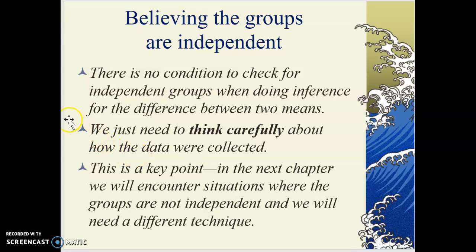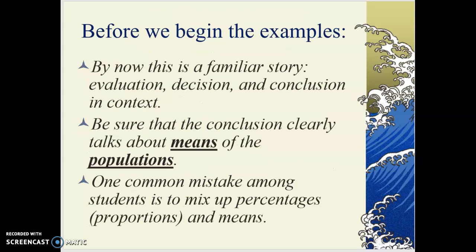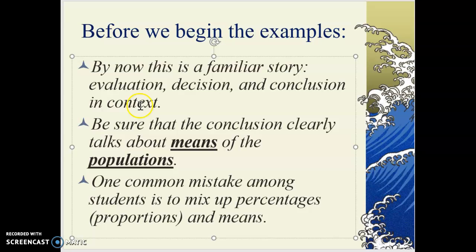Regarding independence, there's no special condition to check mechanically — you just need to think carefully about how the data were collected. Look at the context of the problem and make a decision. It's a key point because in the next chapter we'll encounter situations where data is not independent, and you'll have to decide what the correct statistical technique is. So before we begin, let's think about our game plan: we're going to evaluate, make a decision, and then write up a conclusion. Be sure the conclusion talks about the means of the populations and the difference of those means.